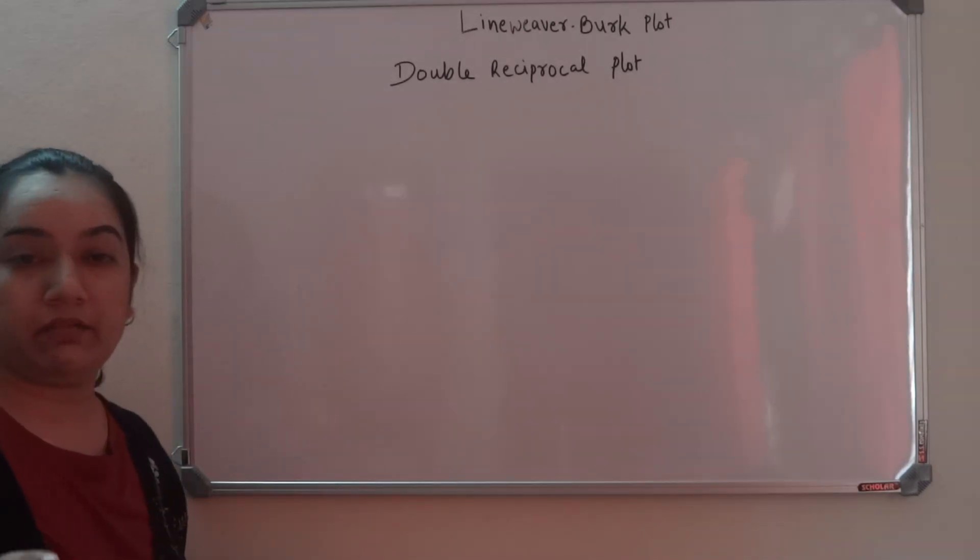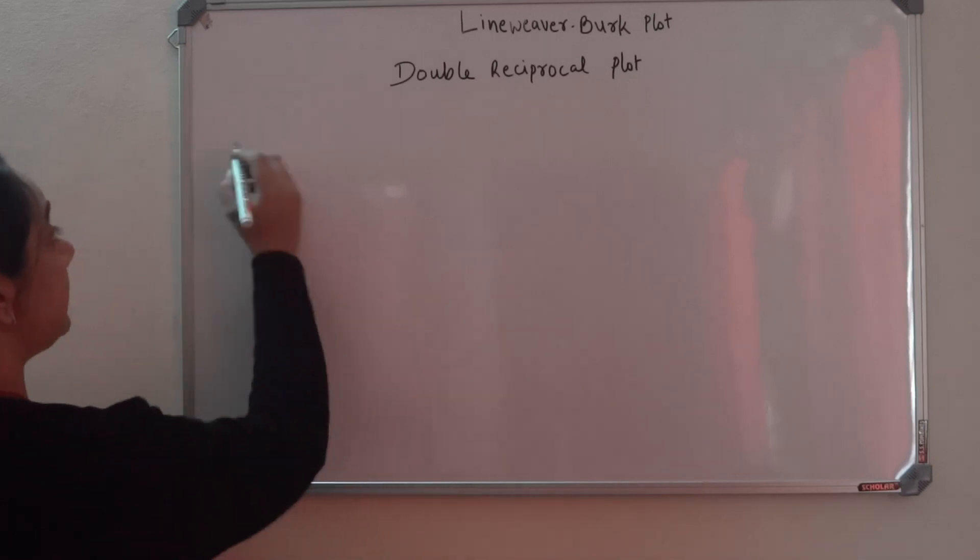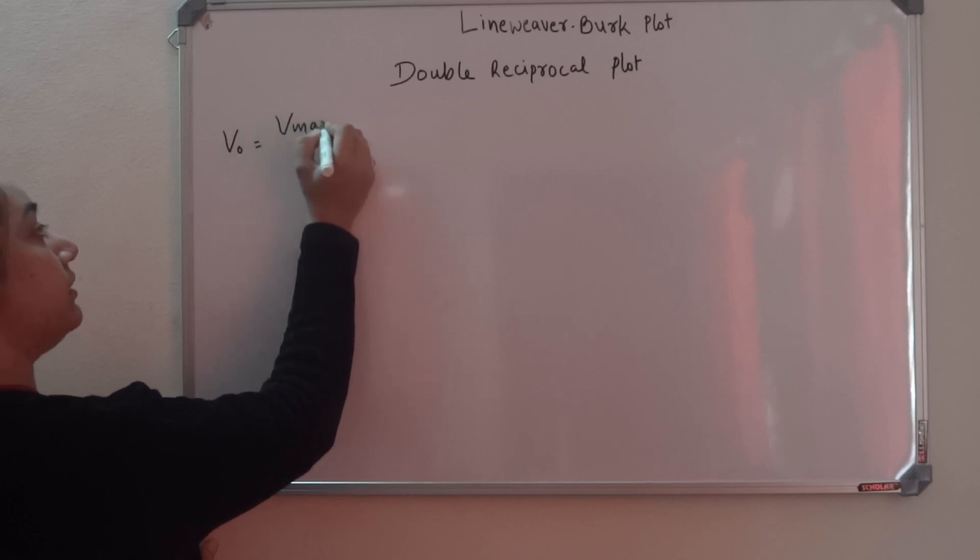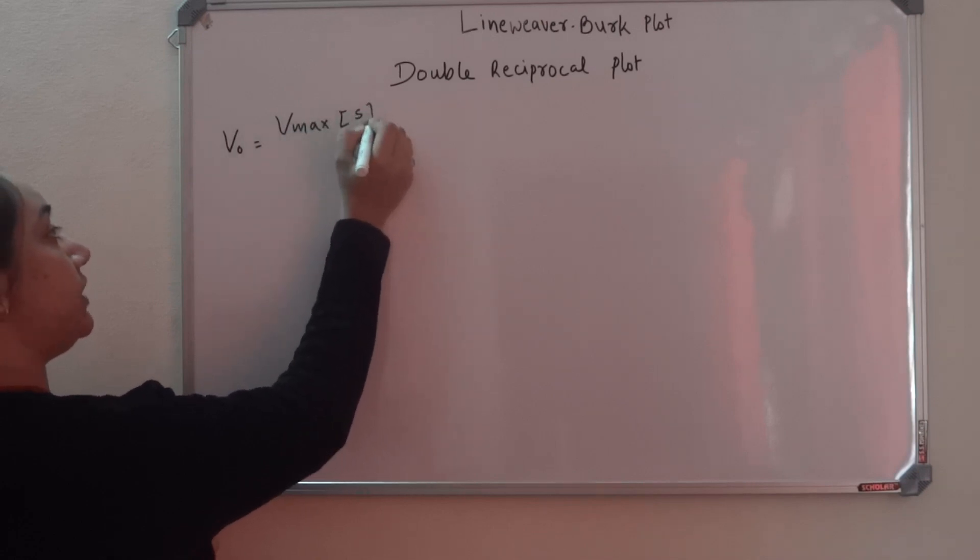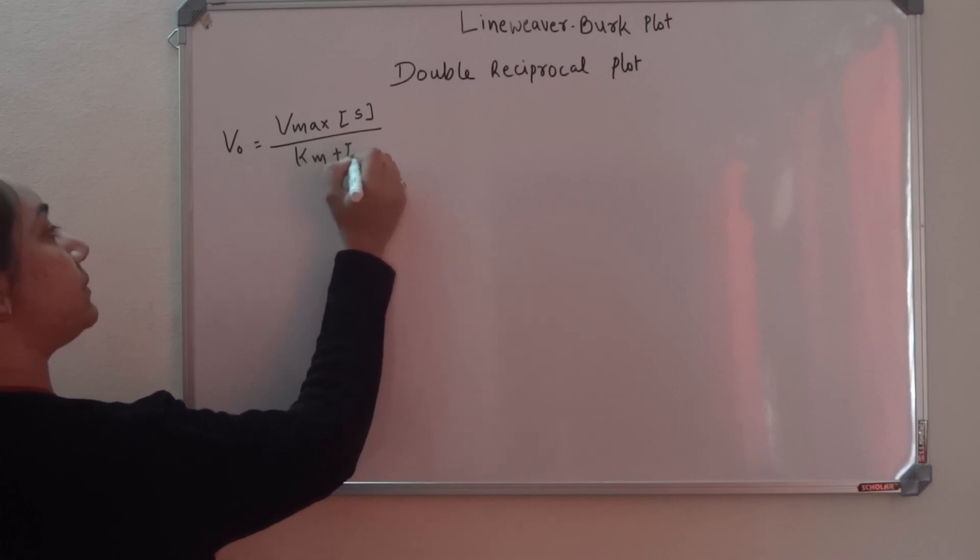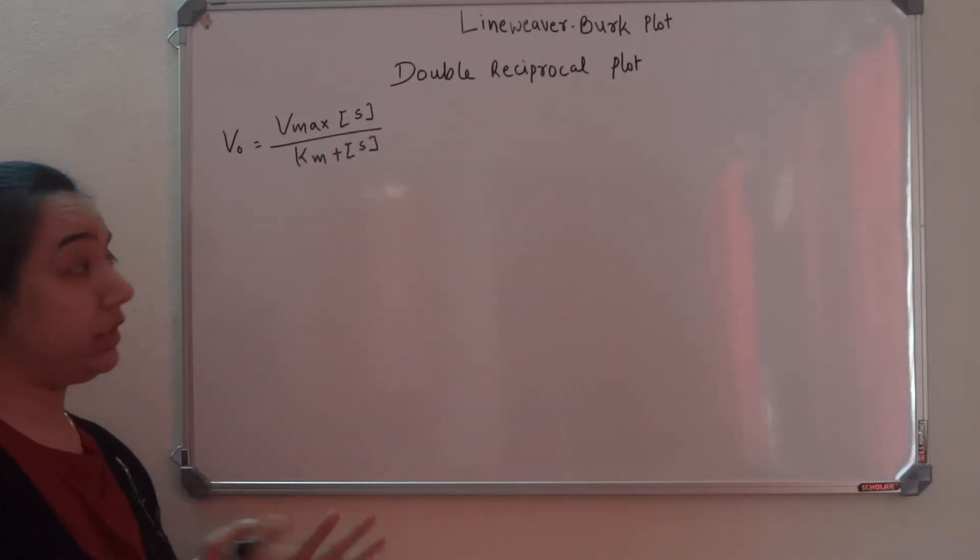The Michaelis-Menten equation is: V0, the initial velocity, equals Vmax times substrate concentration divided by Km plus substrate concentration. We all know this, right? The MM equation.